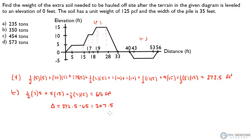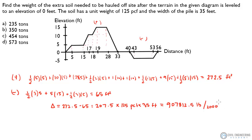Now what do we need to do? We were given the unit weight and the width, so we multiply 207.5 by 125 pcf, then multiply by 35 feet in width. That gives me 907,812.5 pounds. The answer is in tons, so we divide by 2,000 pounds per ton, and I get an answer of 453.9 tons. The closest answer is C.